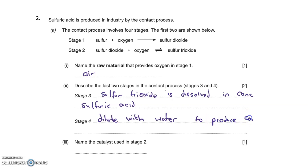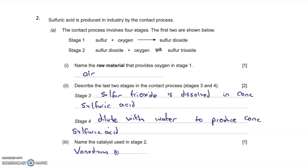The idea that the mixture is diluted with water to produce concentrated sulphuric acid is required for the mark. Part 3 asks for the catalyst used in stage 2 — remember, stage 2 is where sulphur dioxide reacts with oxygen to form sulphur trioxide. The catalyst is vanadium 5 oxide, formula V2O5. If you said that, you get one mark.